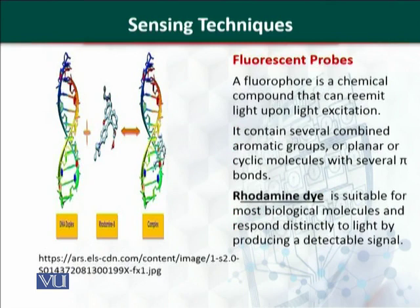Another technique uses a fluorophore — a chemical compound that produces fluorescence, which is the light emitted after excitation. A common example of a fluorophore is rhodamine, a pink-colored dye used as a fluorescent probe. It has several aromatic groups and is a planar, cyclic molecule with several pi bonds. It physically binds with the biorecognition element.